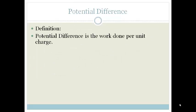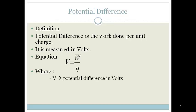So, the definition of potential difference is that it's the work done per unit charge. It's a measure of how much work is required to get the little charge around the circuit. It's measured in volts. The equation for this is V equals W over Q, where V is your potential difference in volts, W is the work done in joules, and Q is the charge in coulombs.